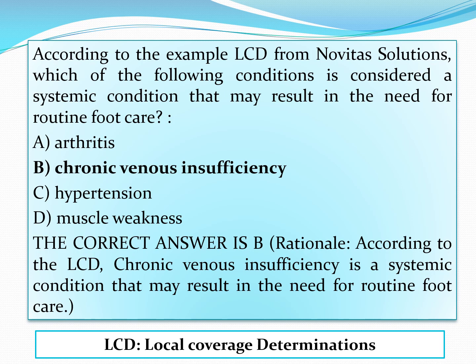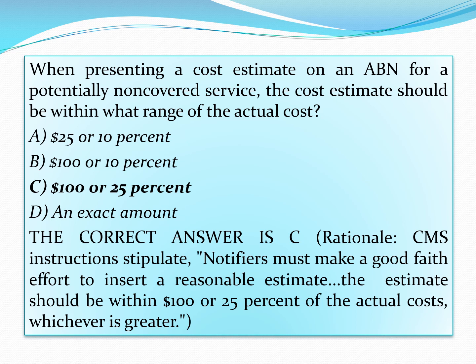When prescribing a cost estimate on an ABN for a potentially non-covered service, the cost estimate should be within what range of the actual cost? The answer is option C — within $100 or 25% of the actual cost. CMS instructions stipulate that notifiers must make a good faith effort to insert a reasonable estimate, within $100 or 25% of actual cost, whichever is greater.